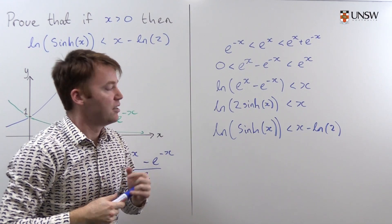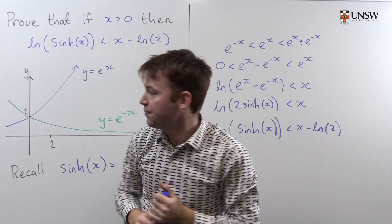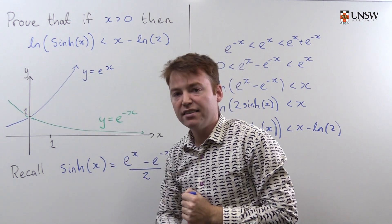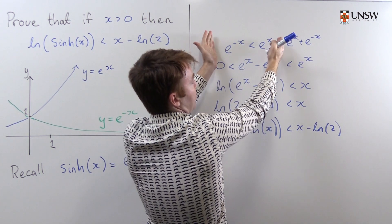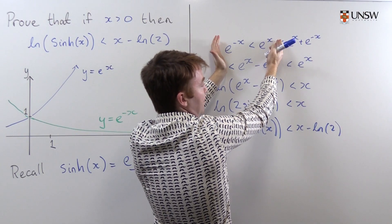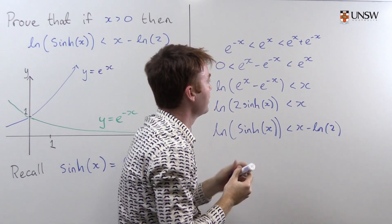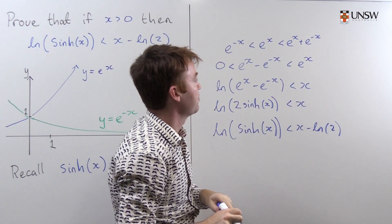Now I've got something that follows easily from x is greater than 0. I can see from my diagram that e to the negative x is always less than e to the x. So I've got this inequality here from the diagram. This one here I might need to work a little bit harder for, but it follows fairly straightforwardly.